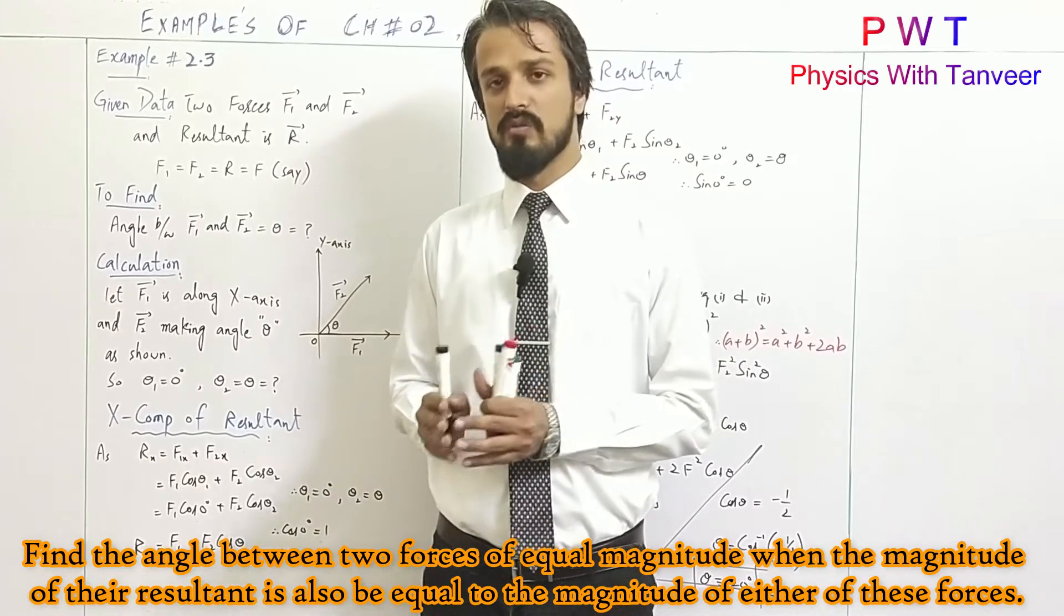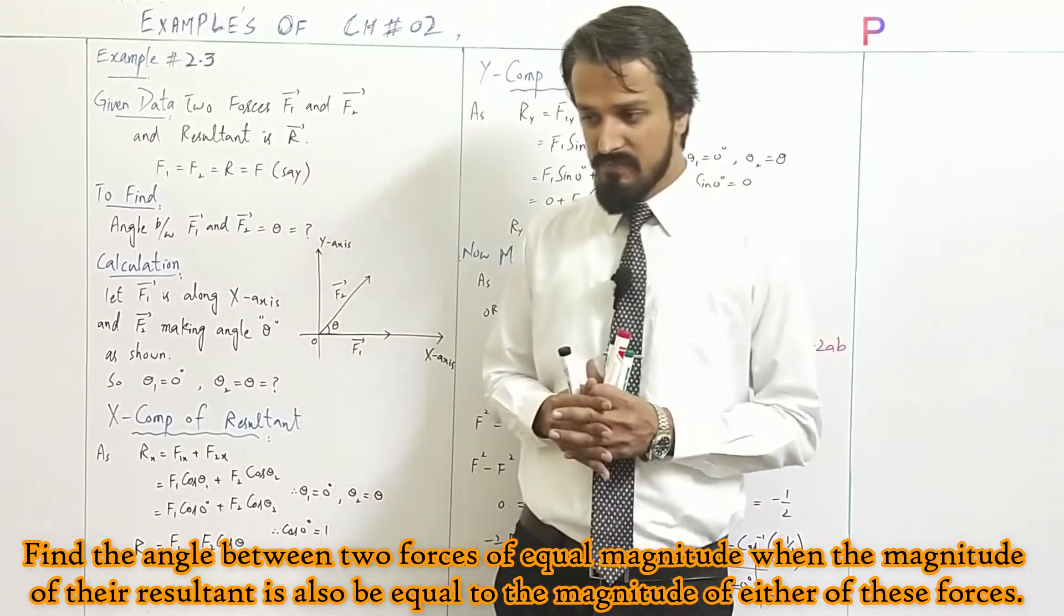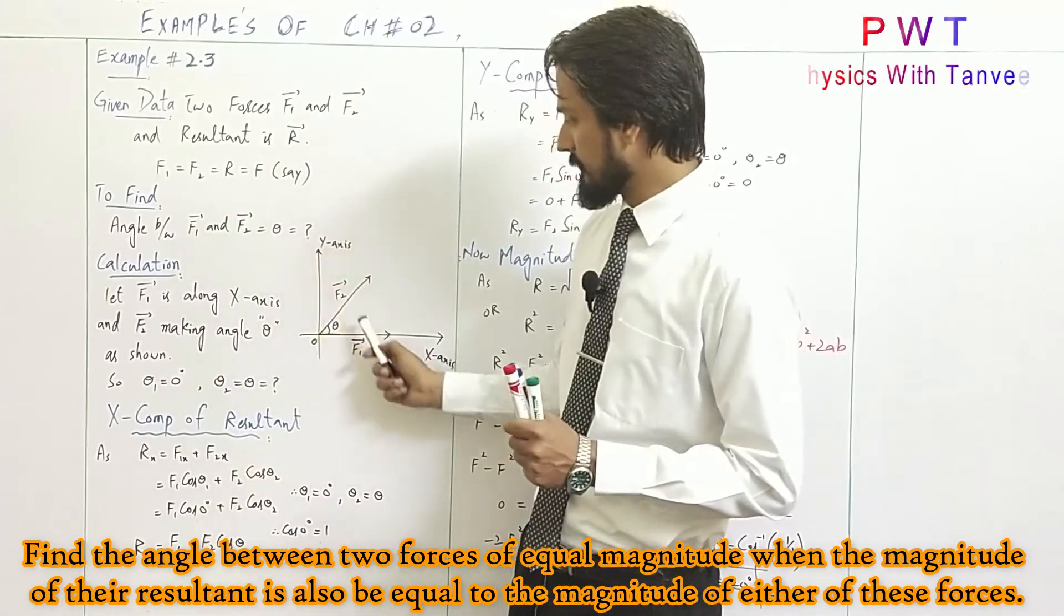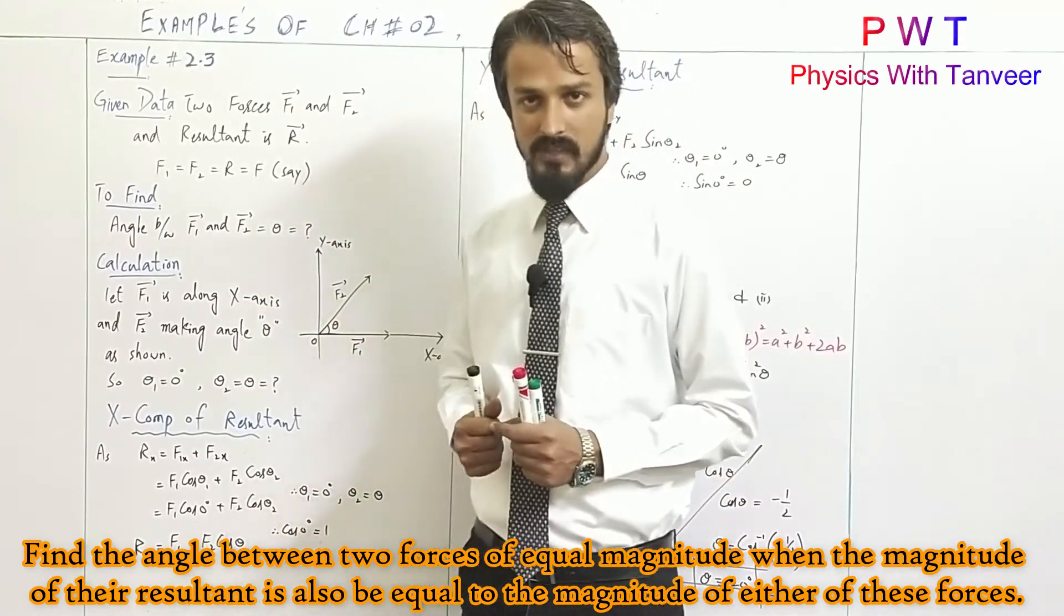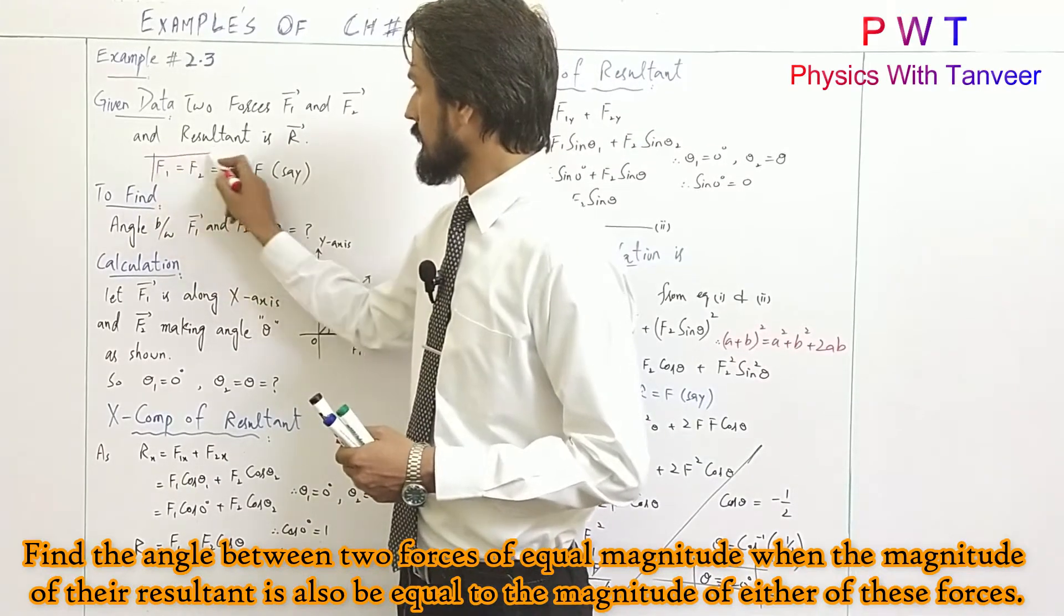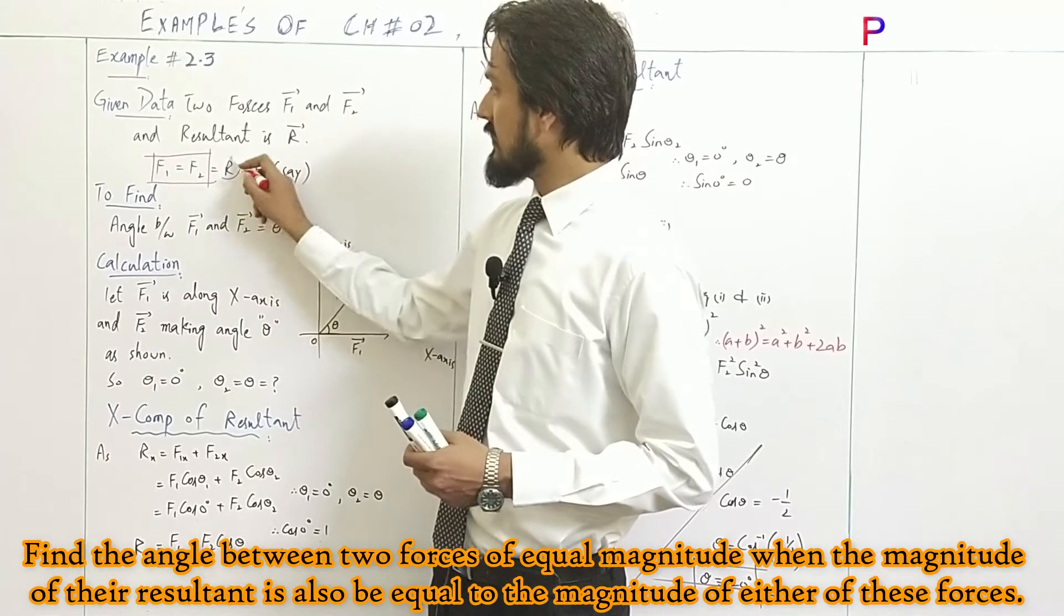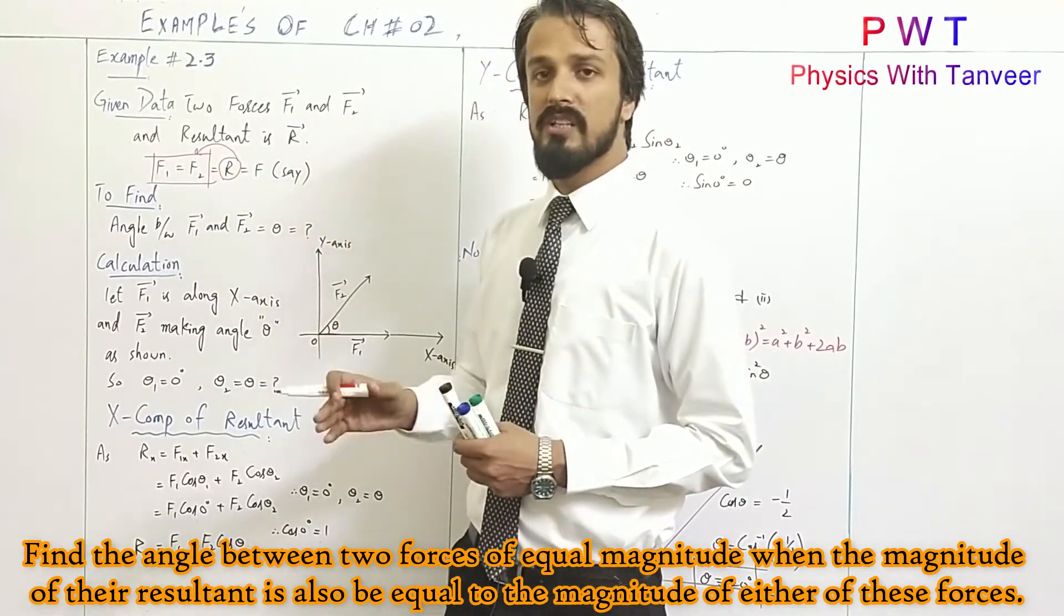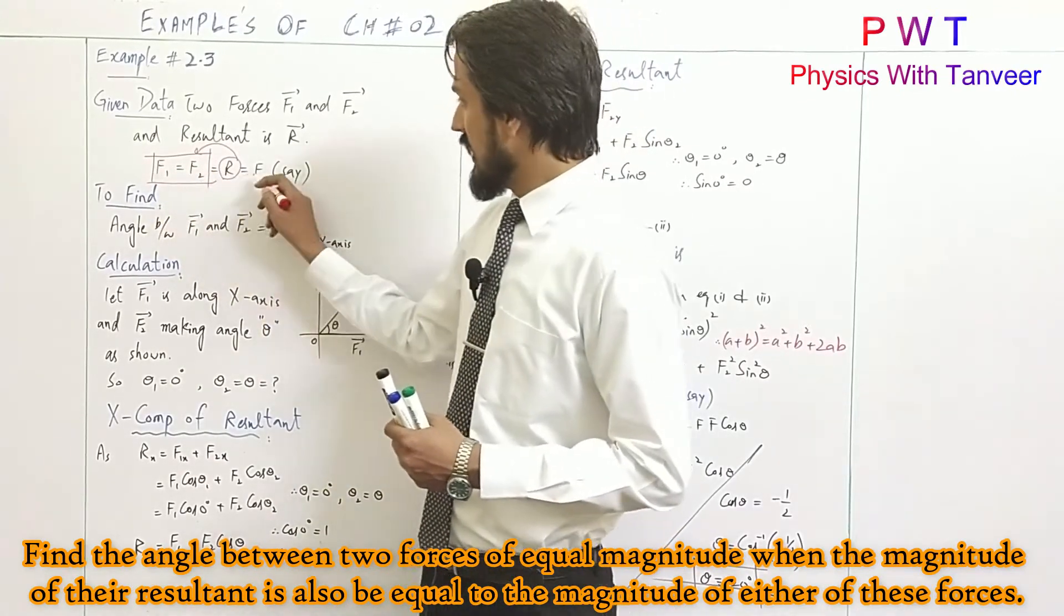If you understand this statement, the problem is to find the angle between two forces. Let's suppose two forces with angle theta between them. These two forces are equal, that is given in the statement, and the resultant will also be equal to the magnitude of either of these two forces. Let's suppose that magnitude is F.